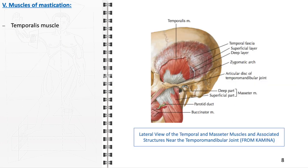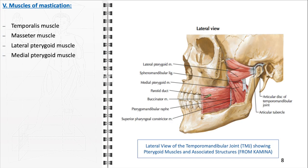The muscles of mastication and the temporomandibular joint share a closely intertwined relationship, with these muscles being pivotal for the movement and function of the temporomandibular joint. Key muscles involved in jaw movement during activities like chewing and biting include the temporalis, masseter, lateral pterygoid, and medial pterygoid muscles. Their coordinated action ensures effective mastication, speech, and other jaw-related activities, while also maintaining the stability and proper alignment of the temporomandibular joint, playing a vital role in overall oral and facial function.